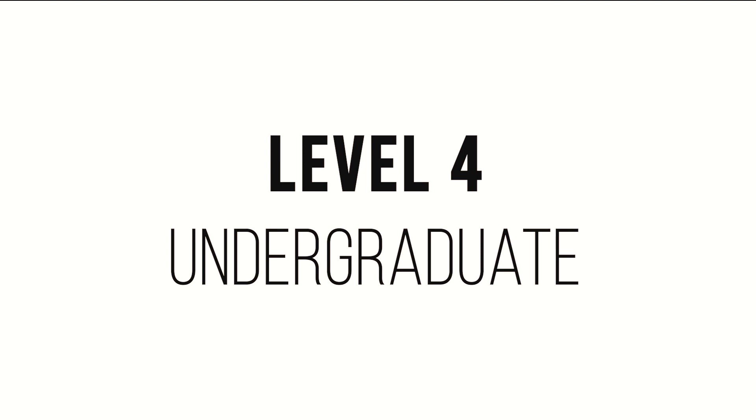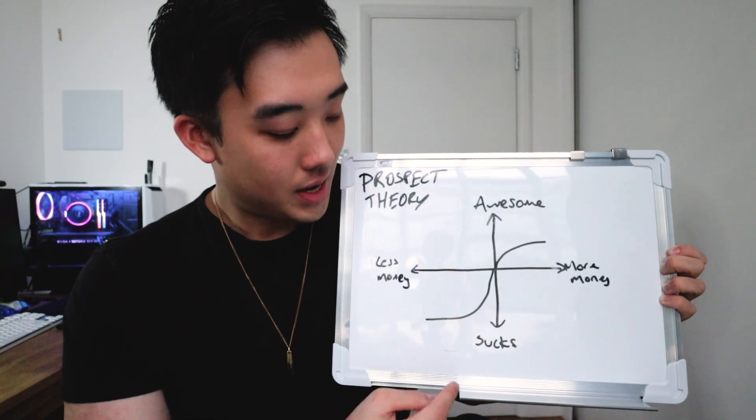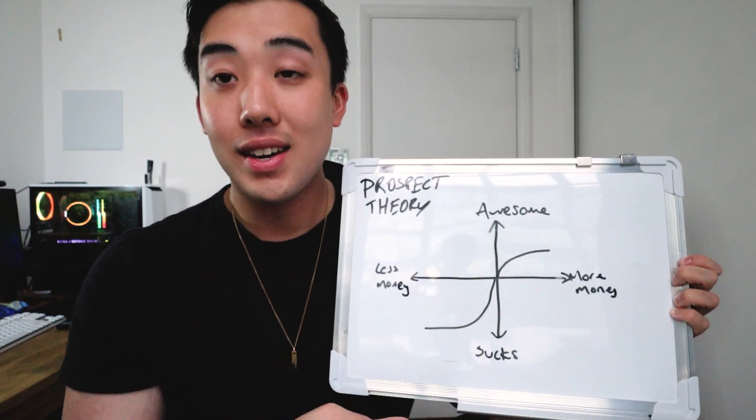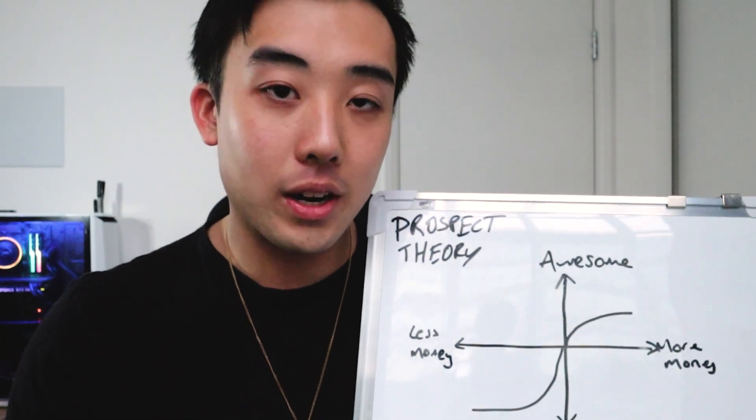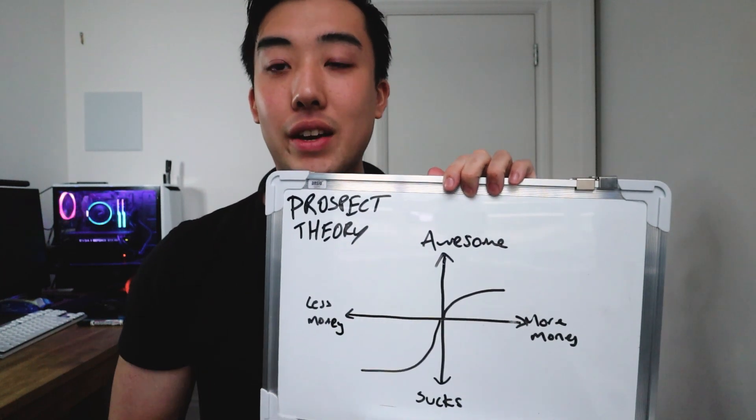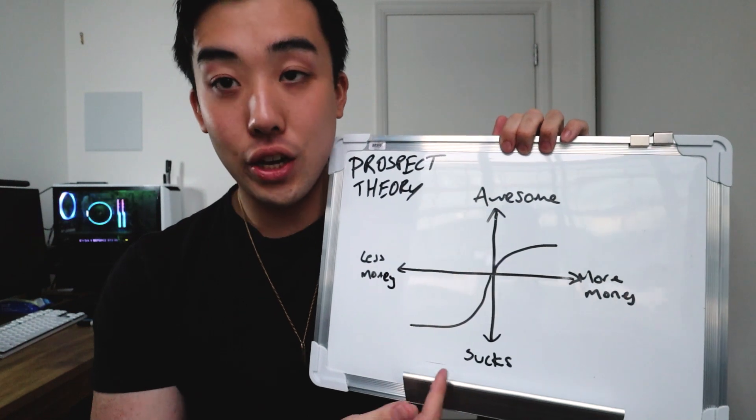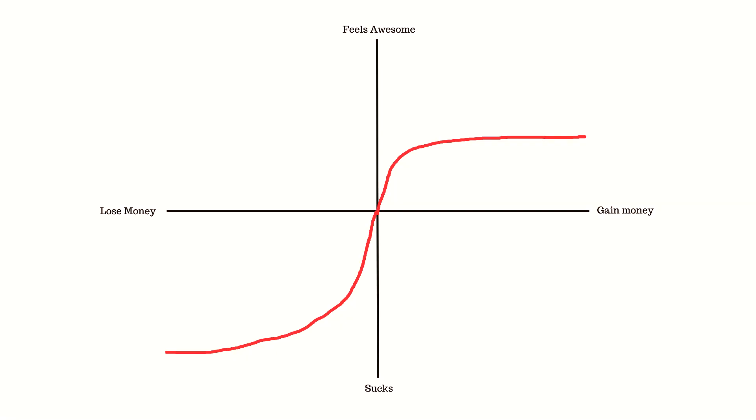But is this effect constant and consistent across all different levels of gains and losses? To explain that we need to go to level four. I'm going to show you a graph with four labels: from less money to more money, and from awesome to sucks. What this curved line represents is how you feel at different levels of gains and losses — and you'll notice it's curved and flattens out at a certain point. Gaining money is only enjoyable up to a point, and past that your emotional response is pretty much the same. Similarly, losing money flattens out — it sucks until a certain point and then it can't really feel worse.